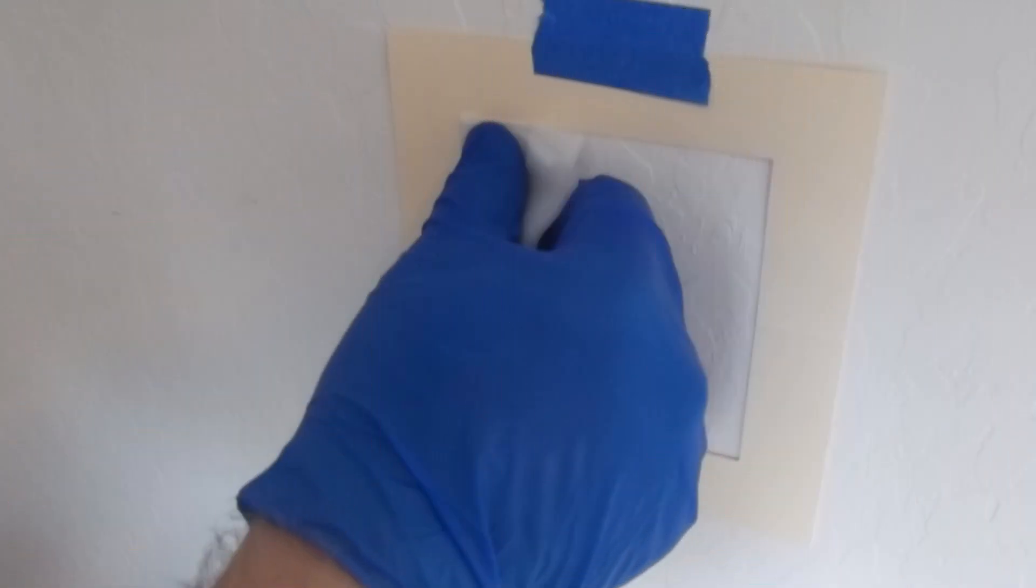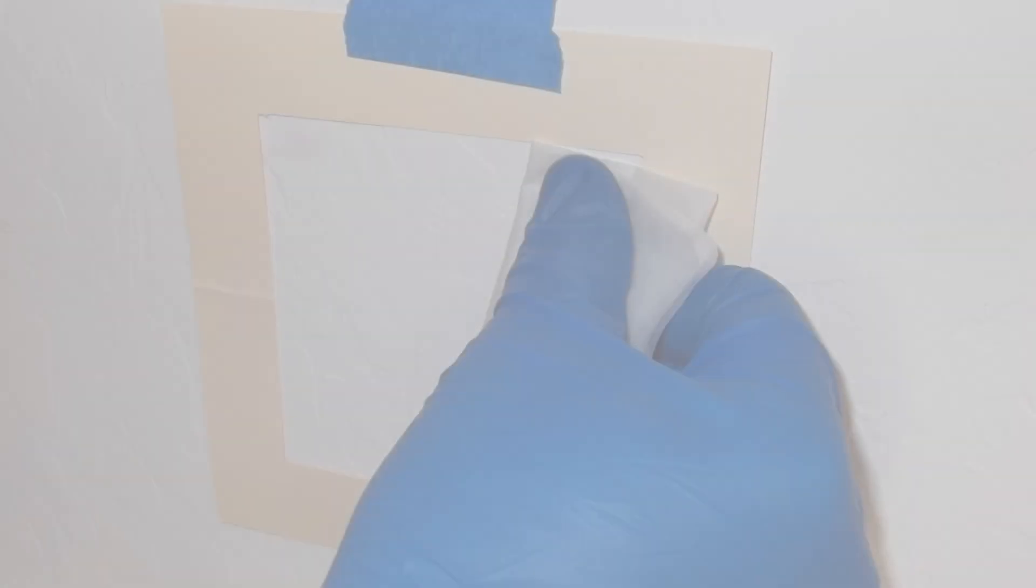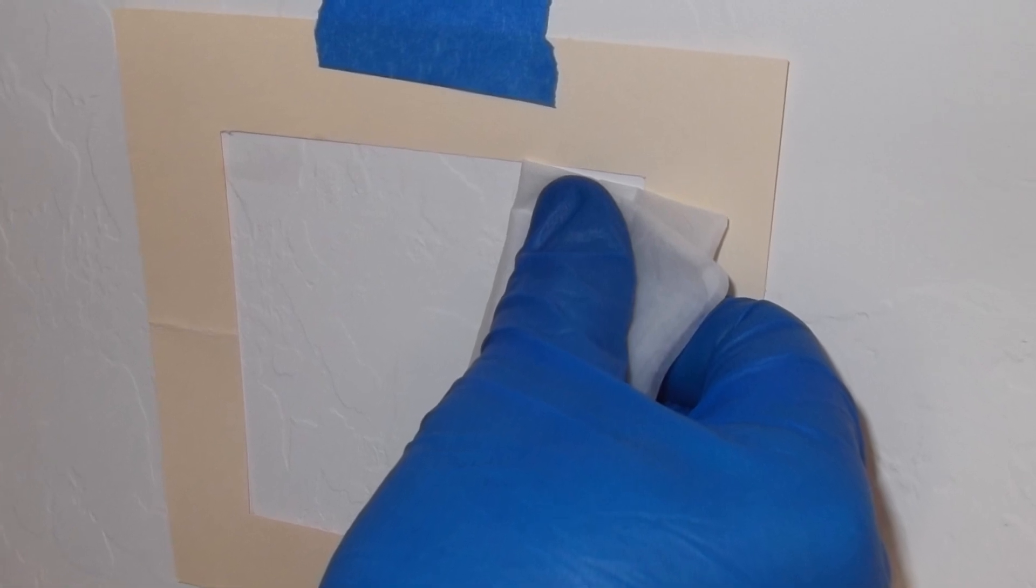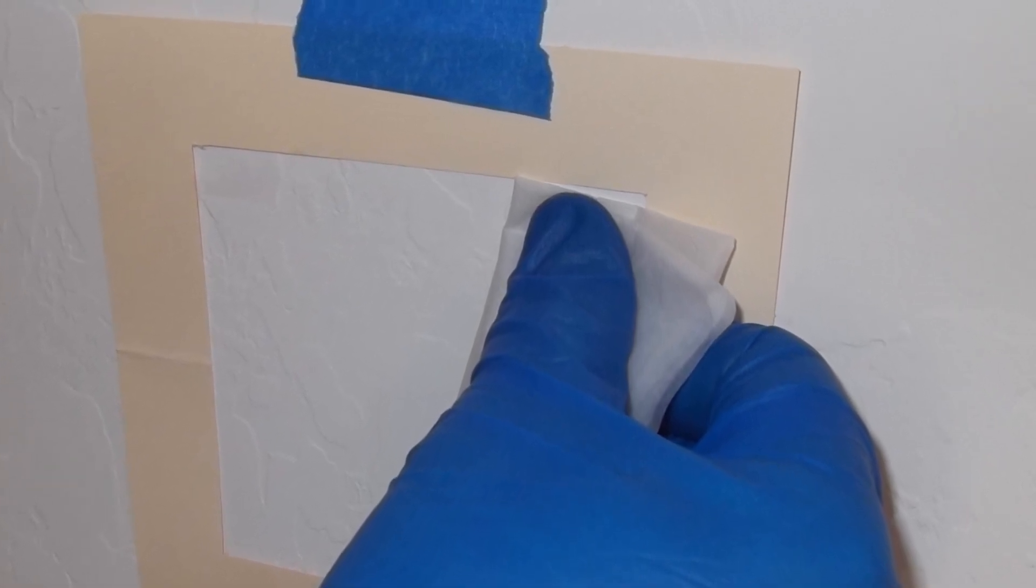Using firm pressure, wipe the area within the template with at least five overlapping side-to-side horizontal passes. If blotting, be sure to blot at least five times on each horizontal pass.